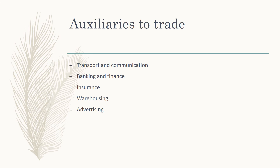The supporting activities of trade are known as auxiliaries to trade. The first one is transport and communication. For example, tea is mainly produced in Assam and cotton in Gujarat. If transportation were not available, we would not be able to use the products of different states. Because of transportation, goods produced in different states reach all the people across different parts of the country.